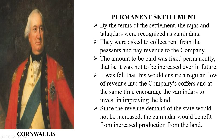However, this system also had certain defects. The zamindars did not take interest in improving the fertility of the land. Their objective was to earn without making any investment in land. The peasants suffered the most under this system. They sometimes had to borrow money from the moneylender in order to pay the revenue to the zamindars.